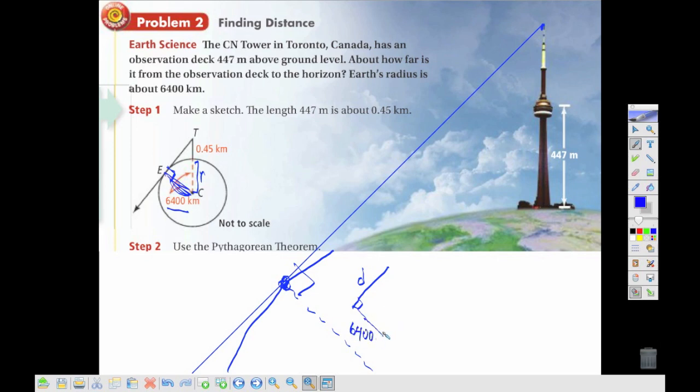would be the same as taking this 6,400, and then coming up, since this is above the Earth, I'll have that 6,400 plus this little bit extra.